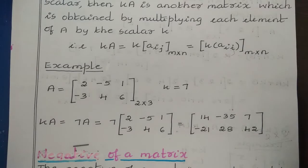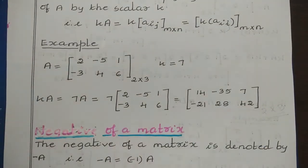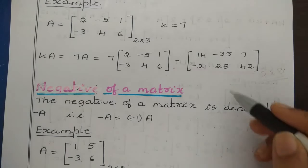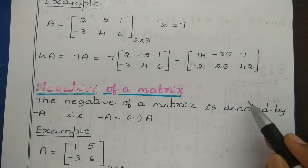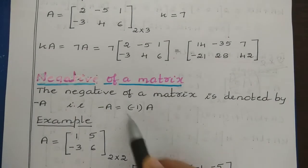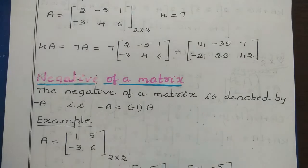Next, we can have one more type of multiplication where we multiply a negative value with the matrix — that is, where the scalar value is negative. We can define a matrix known as a negative matrix, denoted as minus A. This minus A is obtained by multiplying minus 1 with A, so minus 1 acts as a scalar here.